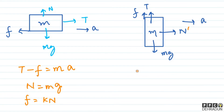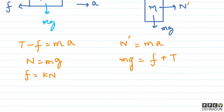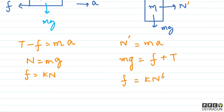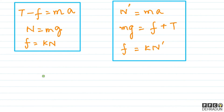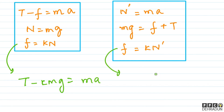For block 2, N-dash must equal m times a. Additionally, the upward and downward forces must balance, so mg equals friction plus tension. Here again, friction equals k times N-dash. So to find acceleration, using the first equation we write: Tension minus k·mg equals m·a. And for block 2: mg equals k·m·a plus Tension.